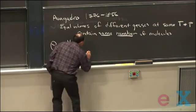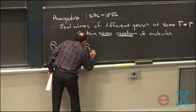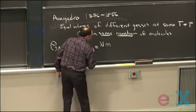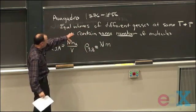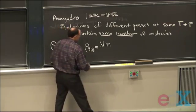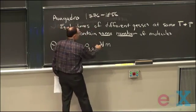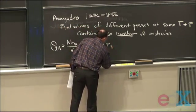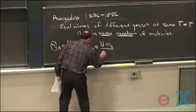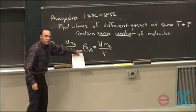I can do it for another gas at equal volume of another gas. It has the same number, according to his hypothesis. Different molecule, so it has different mass. Divide by the same volume, I'll get a different density.